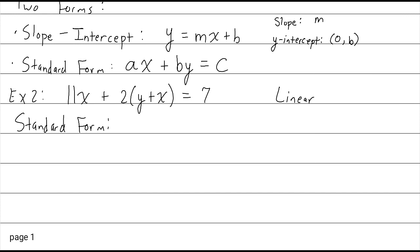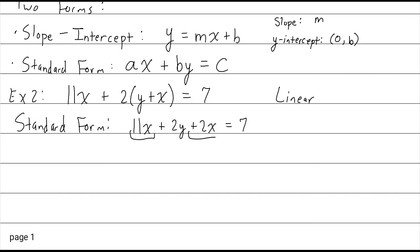So 11x plus 2 times (y plus x) — I'll distribute that 2. 2 times y is 2y, and 2 times x is 2x, equals 7. Then combining like terms: 11x plus 2x gives me 13x. So 13x plus 2y equals 7, which is in standard form: ax plus by equals constant c.